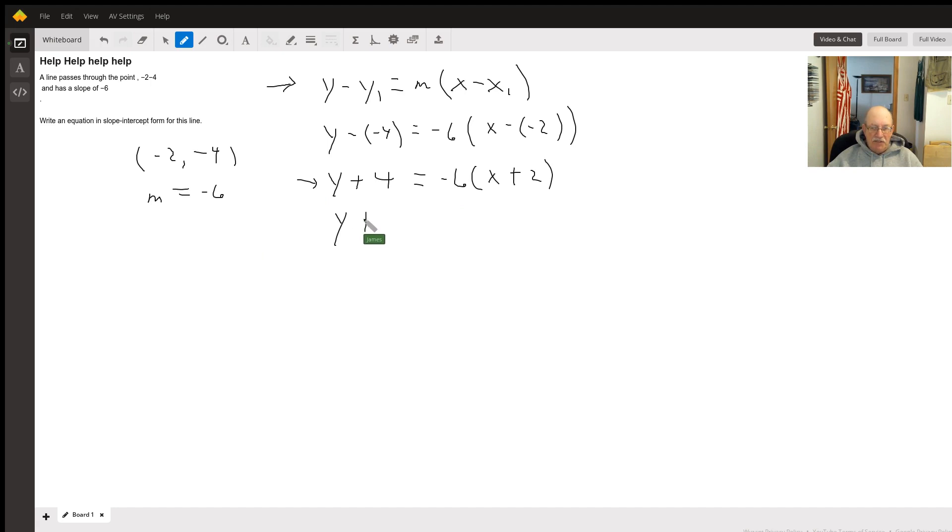So we still get y + 4 is going to equal, do a little distribution on the right side, -6x - 12. Then we're going to subtract 4 from both sides and we'll get y = -6x - 16.